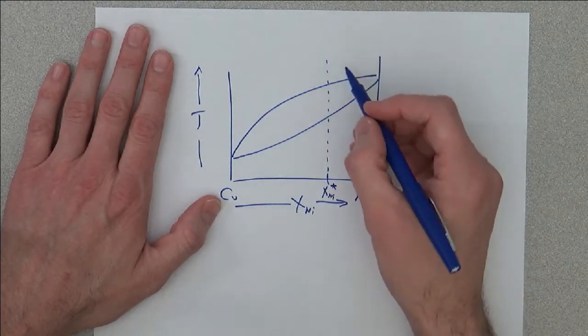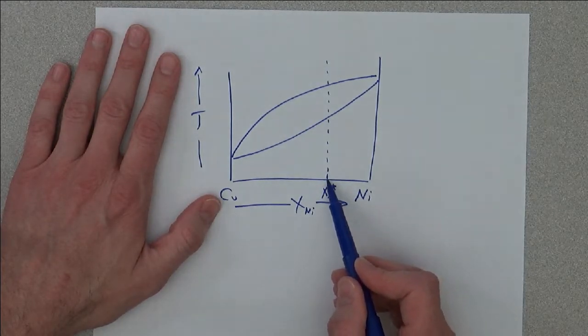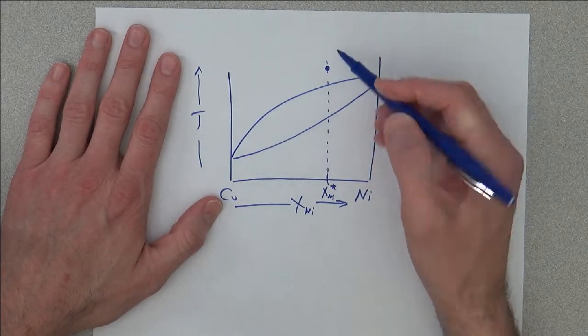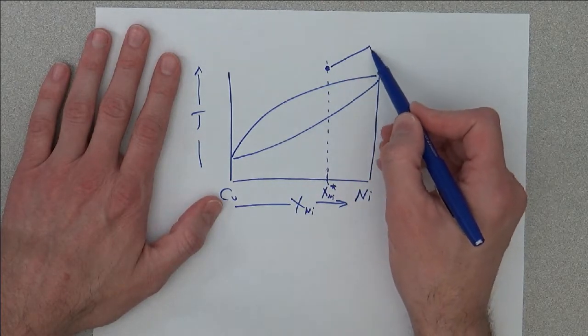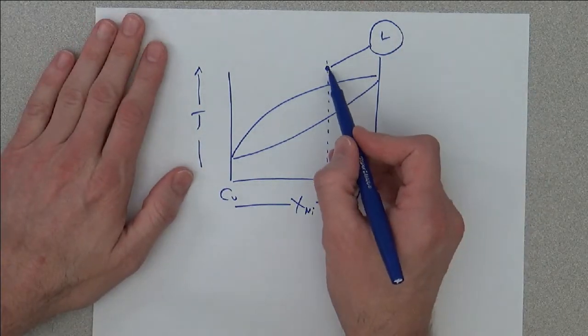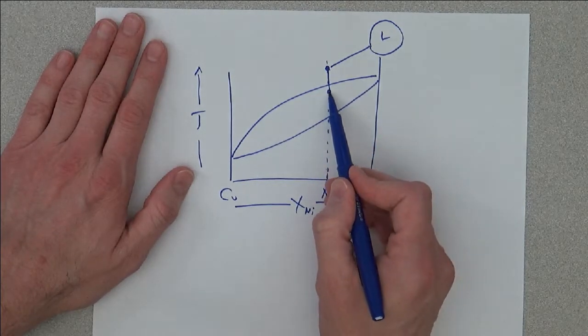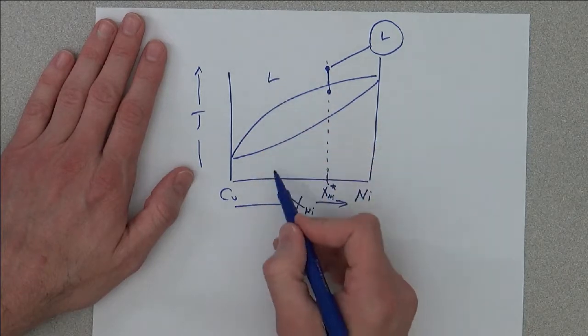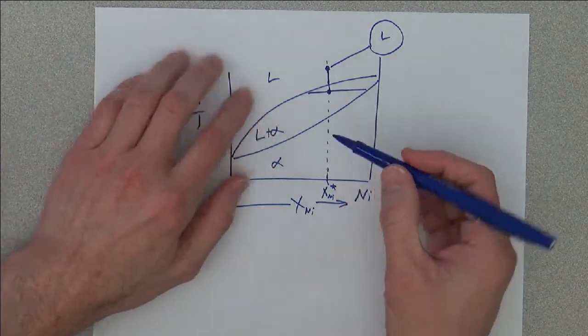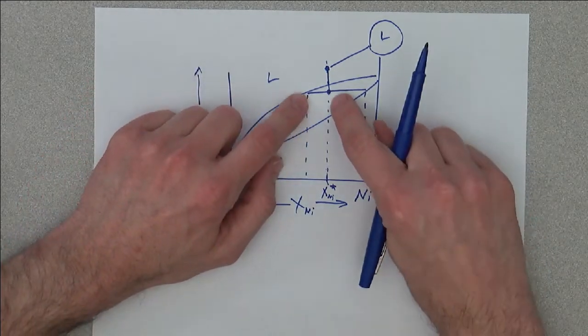Mix some copper and nickel together, we know the molar fraction that we're putting in of each. We go to high temperature, melt it, and we have all liquid phase. Then we cool down into the liquid plus alpha region, and we can determine...